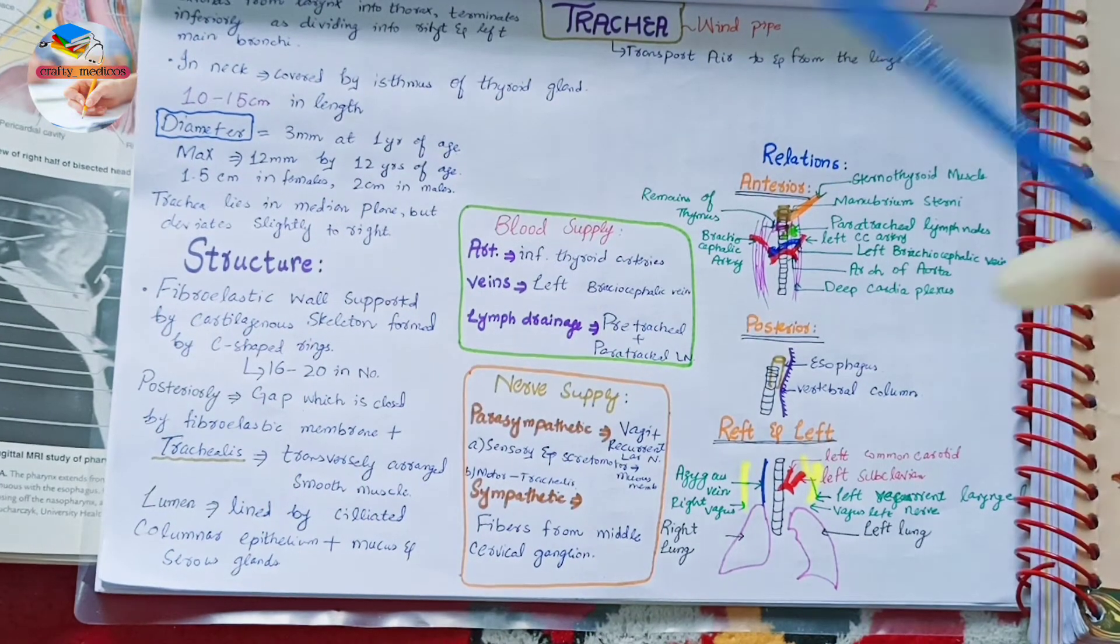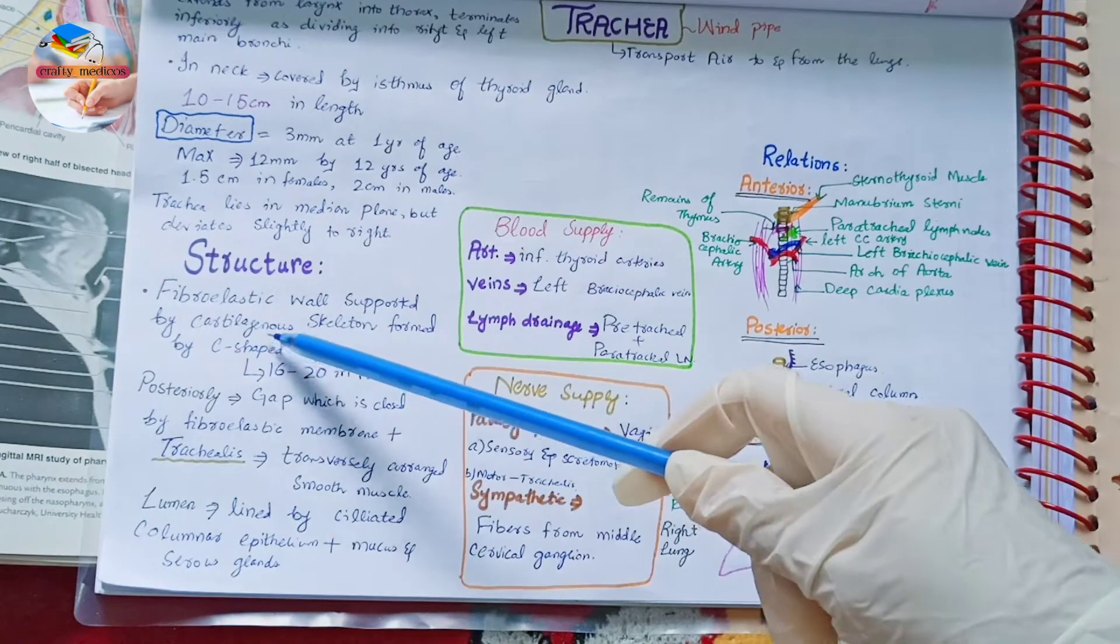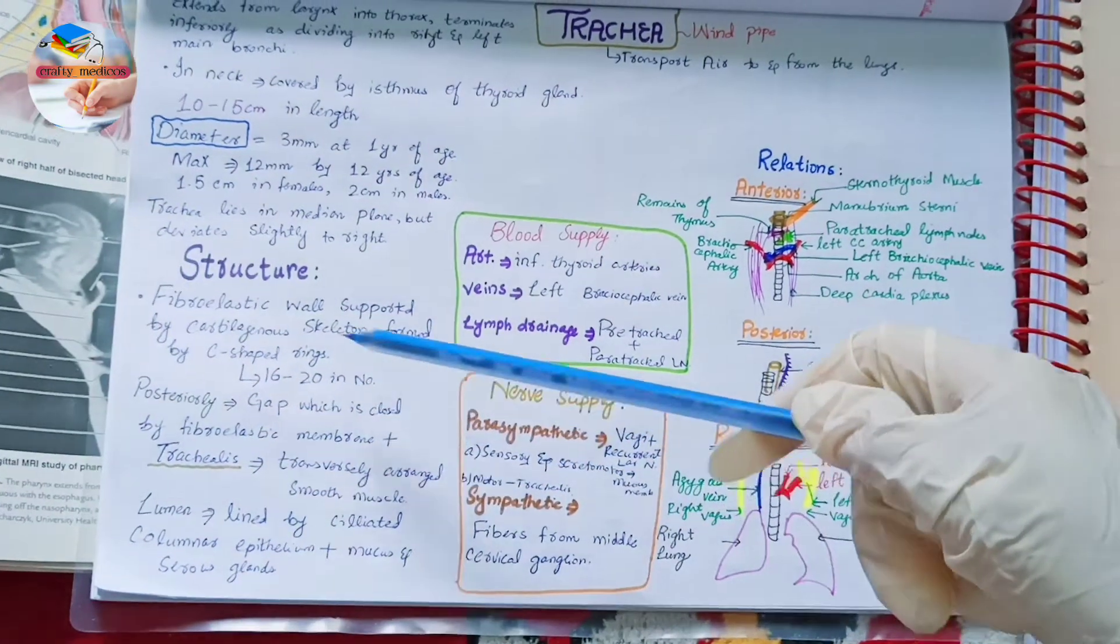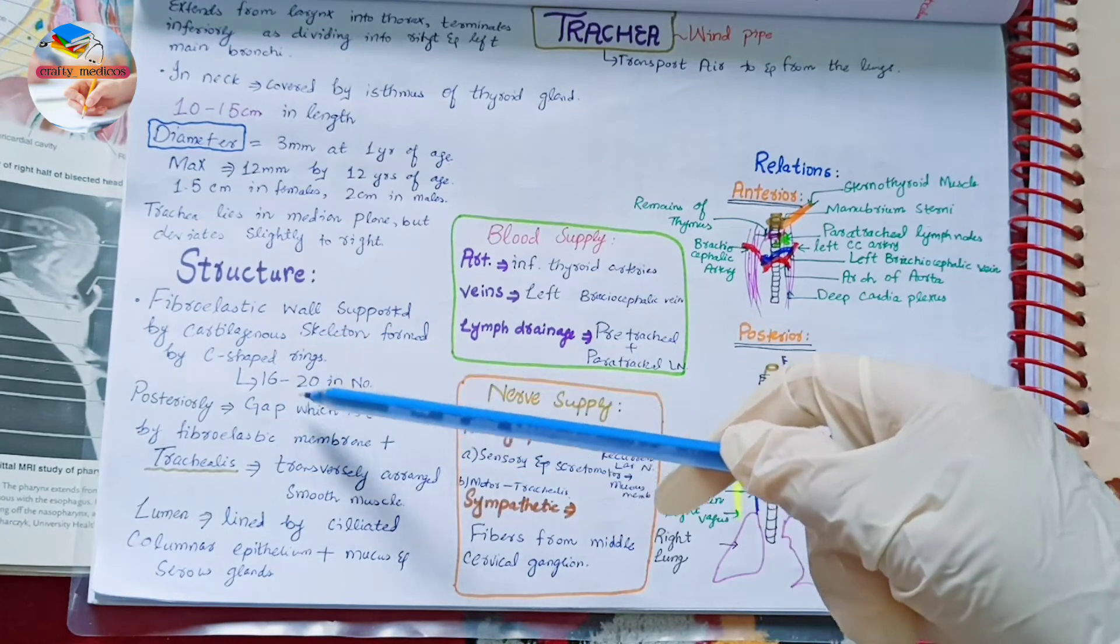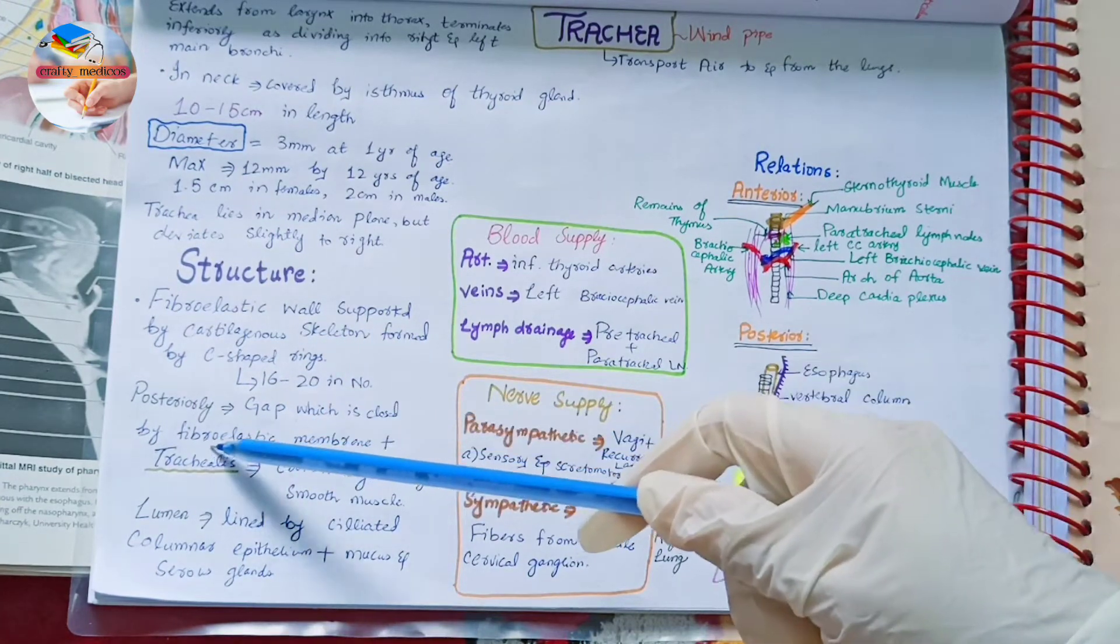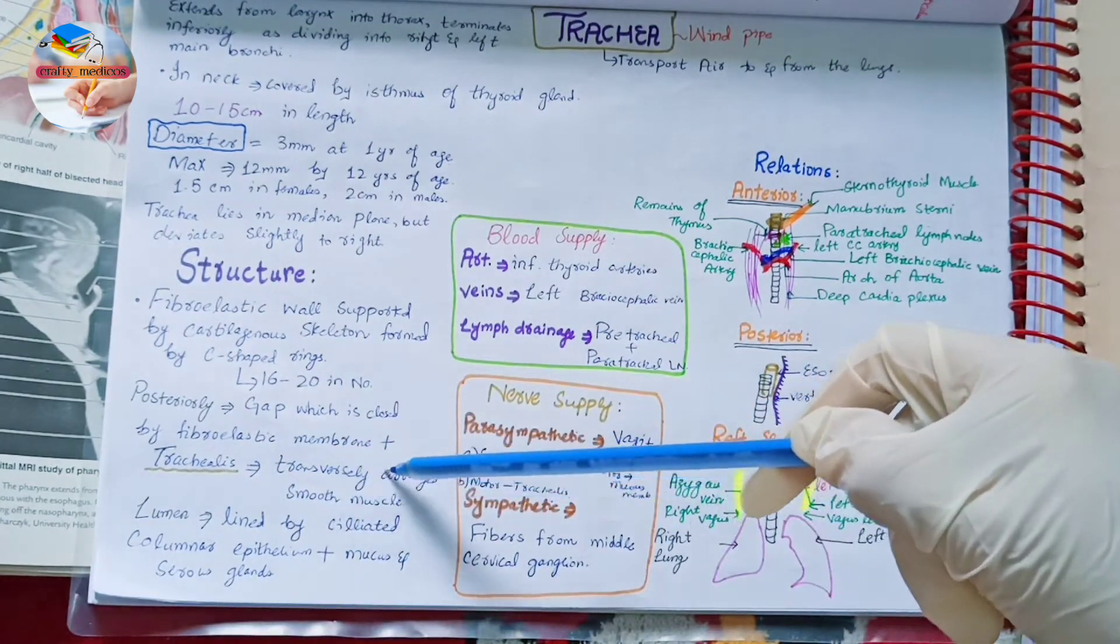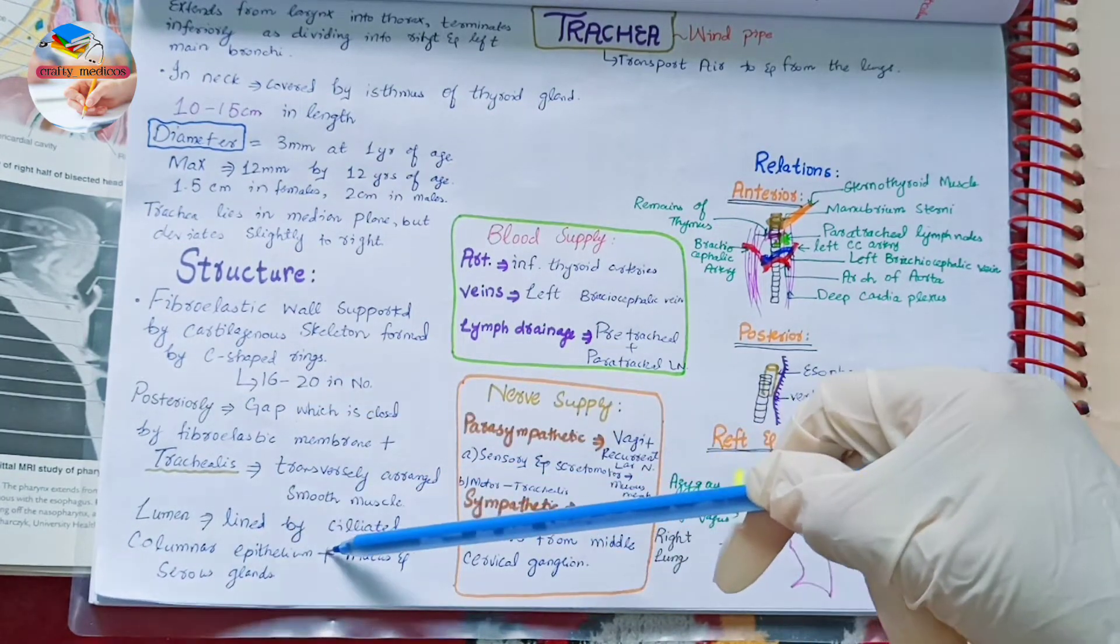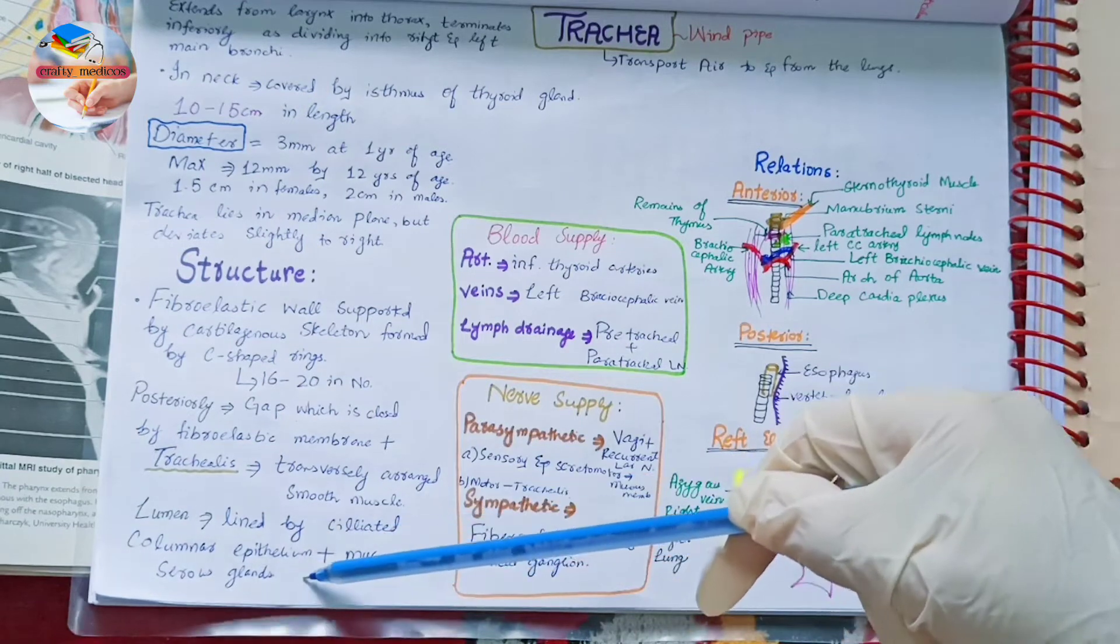The structure of the trachea: it has a fibroelastic wall supported by the cartilaginous skeleton formed by C-shaped rings, about 16 to 20 in number. Posteriorly there are gaps between the rings which are spanned by the fibroelastic membrane and a transversely arranged smooth muscle called trachealis. Its lumen is lined by ciliated columnar epithelium and contains many mucus and serous glands.